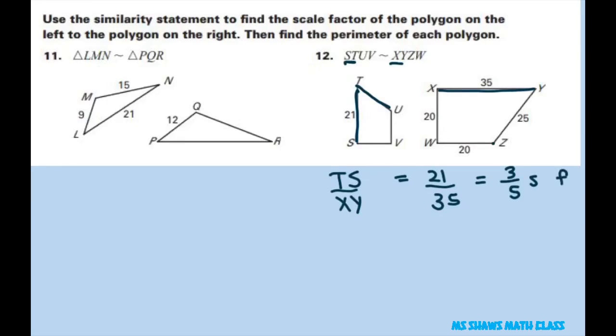And the perimeter of this polygon, just add everything up of XYZW. You add, this is 40, 65 and 35. And that's just going to be 100.